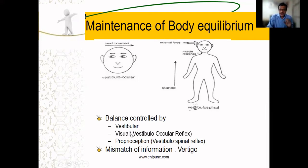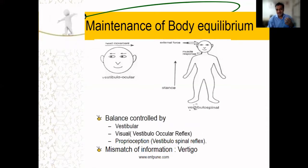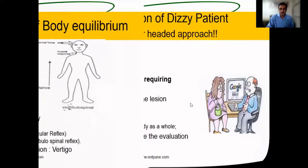So it is the coordination of vestibular, visual, and proprioception, and any misinformation sent to the brain will lead to imbalance. A coordinated effort is required to maintain the balance of the body.